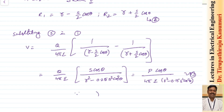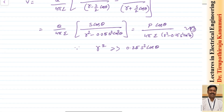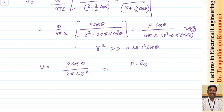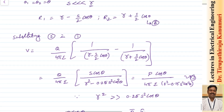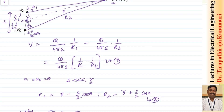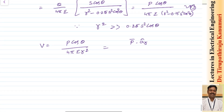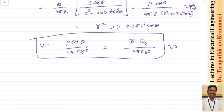We know the value of this radius R is so much greater than the value of S, and if you take R squared, this R squared will be far greater than 0.25 times S squared cos squared theta, because S is very small compared to the radius. So we can simplify: this will become P cos theta divided by 4 pi epsilon into R squared. Or this can be written as the dipole moment taking the dot product with AR — that is, the unit vector in the direction of R — because the angle between the dipole moment and vector R is theta. So it will give cos theta divided by 4 pi epsilon R squared.